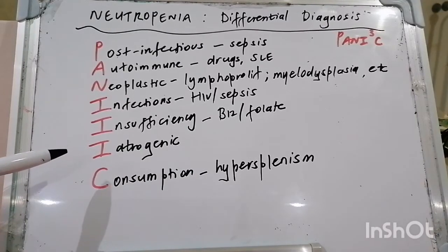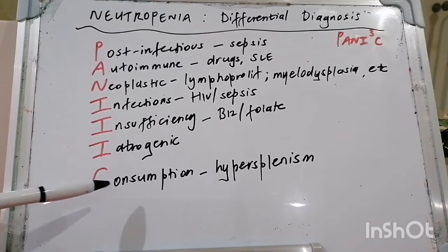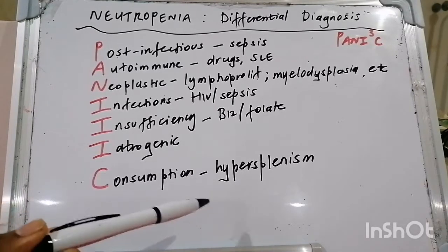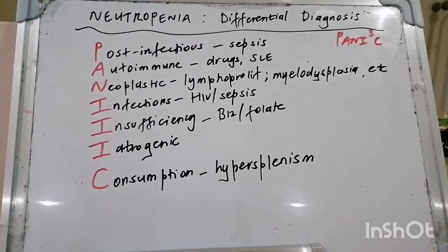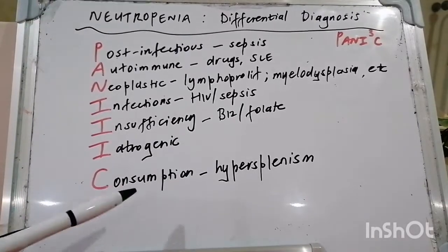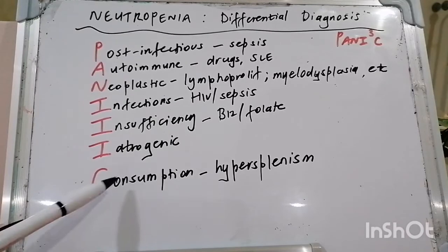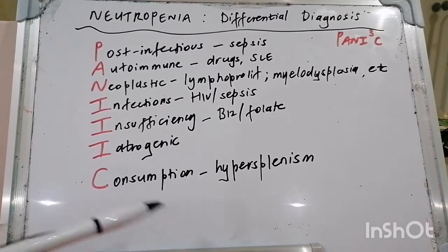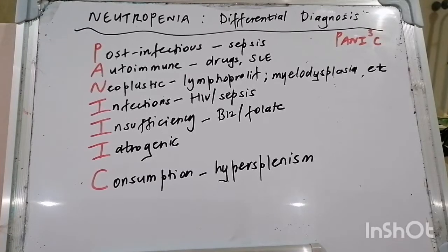Other implicated drugs include synthetic penicillins, phenytoin, carbamazepine — watch out for anti-epileptics — NSAIDs, gold, antithyroid medications, phenothiazines, and clozapine. Consumption in the setting of hypersplenism is also notable; a common cause of hypersplenism in our setting is portal hypertension with splenomegaly, which causes neutropenia through consumption of neutrophils and also causes thrombocytopenia.